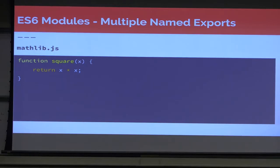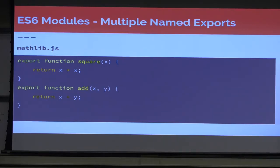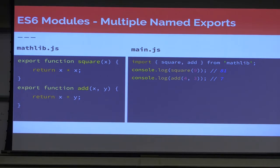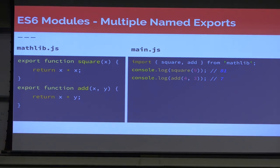Here's an example of a multiple named export. Let's say we have a function called square that accepts a single value and squares it, and another function called add that adds those values. If we export those functions from our mathlib.js, and then in our new JavaScript file we want to use those, with ES6 we can simply import them. We're just importing square and add from mathlib, and then we can console.log our square of nine and our add of four and three, and it works perfectly.